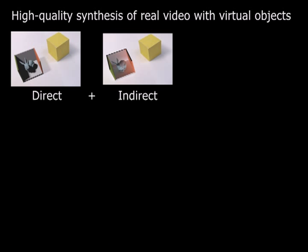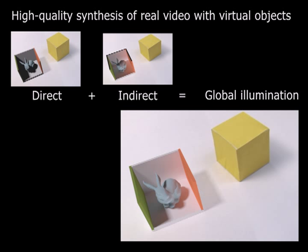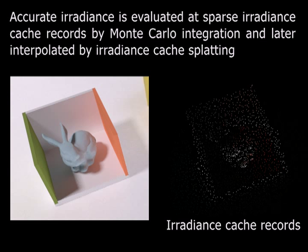The final solution is produced by adding the results of the differential direct and indirect lighting to the input video frame. We achieve global illumination of a mixed reality scene. Accurate irradiance is evaluated by Monte Carlo integration at sparse scene points, shown on the right, called irradiance cache records.